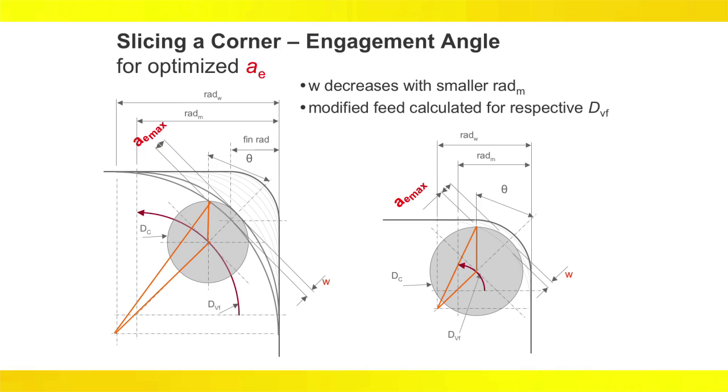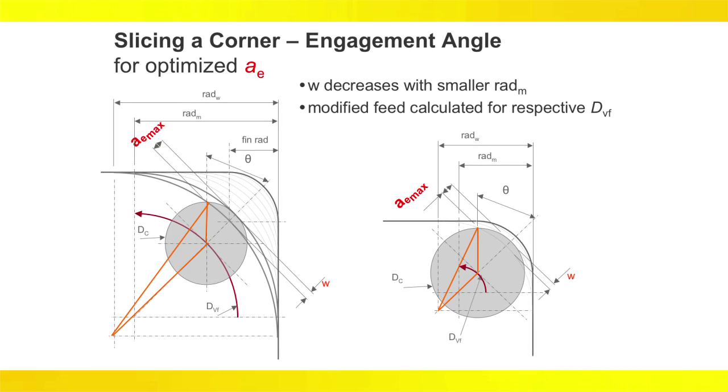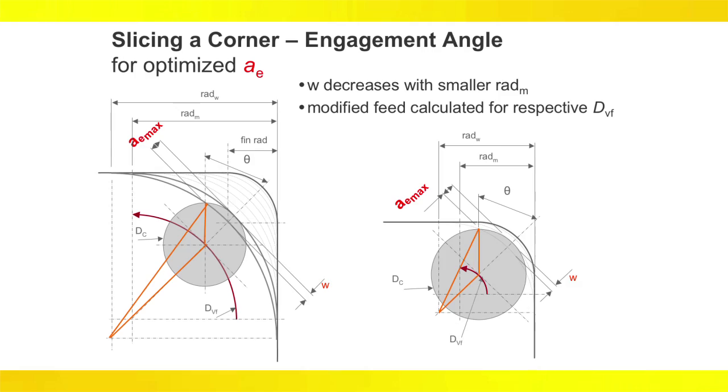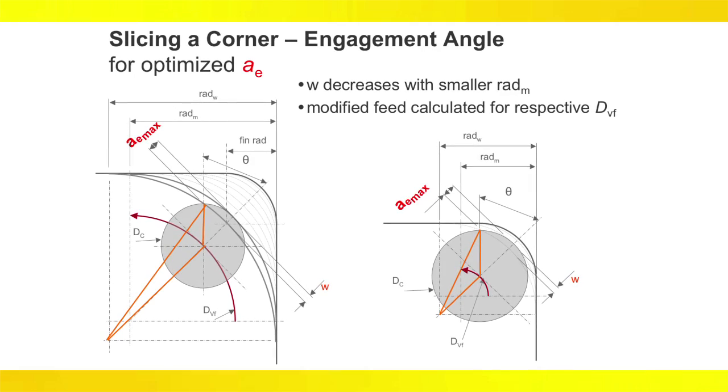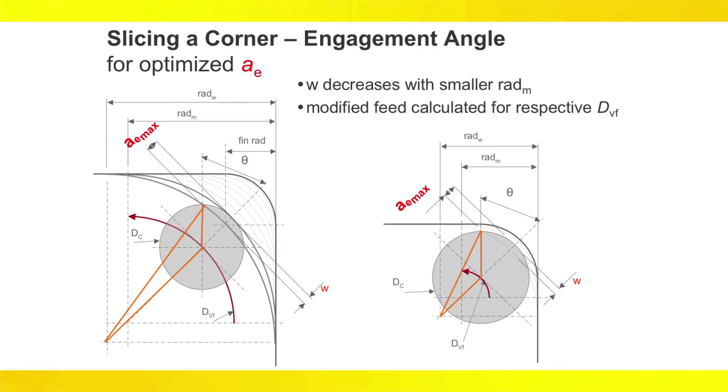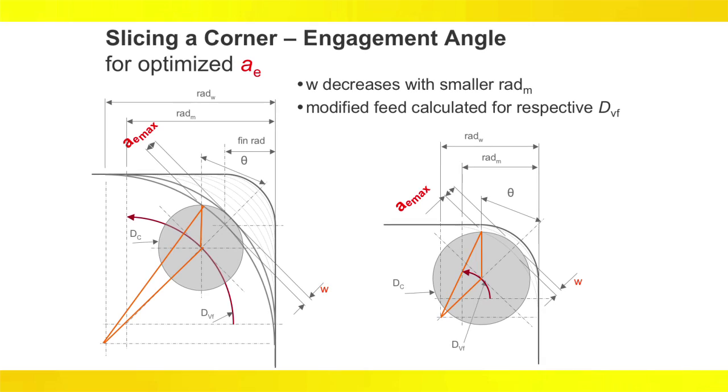To combat this effect, the step over W is reduced with each slice so as to not exceed a set maximum radial engagement. Incorporating this as well as an adaptive feed rate will maximize tool performance.